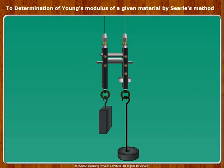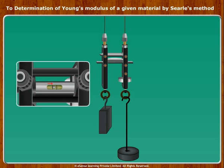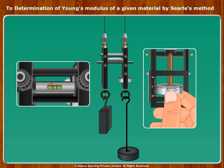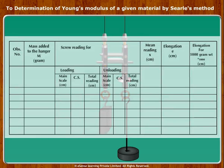To avoid backlash, the screw should be rotated in one direction. Note the direction of rotation needed to lower or raise the tip of the micrometer screw. Adjust the screw so that the air bubble in the spirit level is at the center, meaning the spirit level is horizontal. Note the readings on the main scale and also the circular scale d, and note these in table 2.